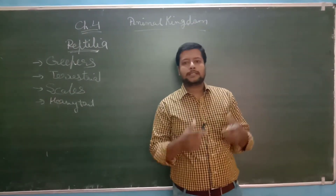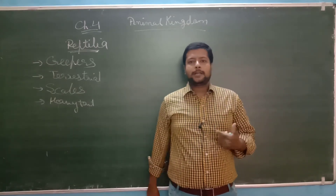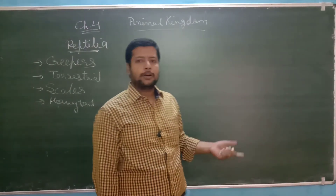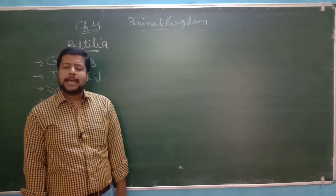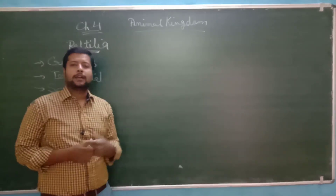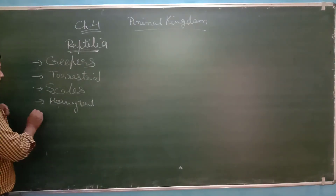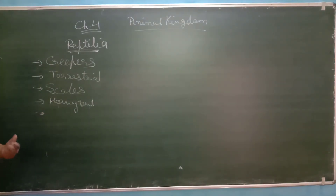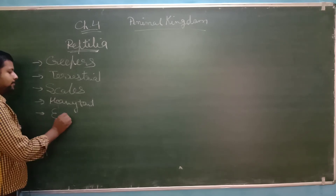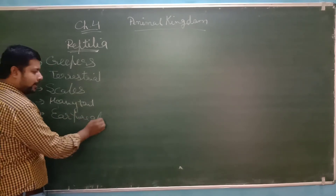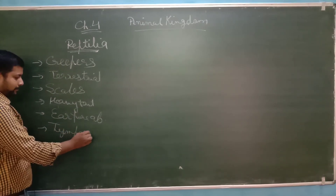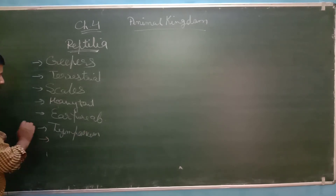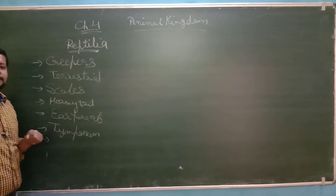When they are running, they are creeping on the ground — the rank. You have seen dinosaurs in movies and images. When dinosaurs are running, they are creeping. Teeth are present. The external ear opening is absent, but the tympanum is present.